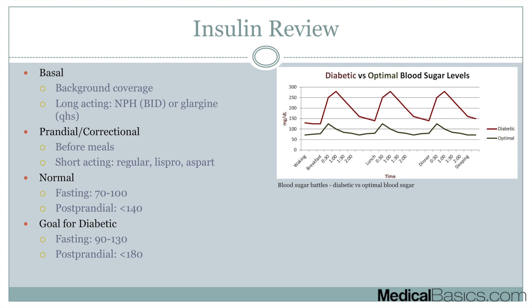The first thing is generally what are the different types of insulin — we talked about this in the last video, so I'm going to touch on this very quickly. You have your basal insulin as well as your mealtime insulin, and that's going to be consisting of your prandial as well as correctional, and that's going to be always before meals. That's going to be all the short-acting insulin, whereas your basal is going to be all the long-acting insulin.